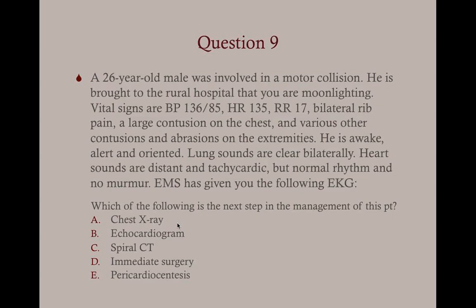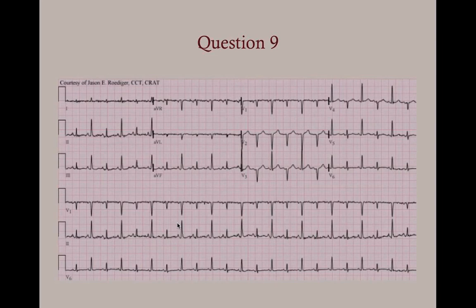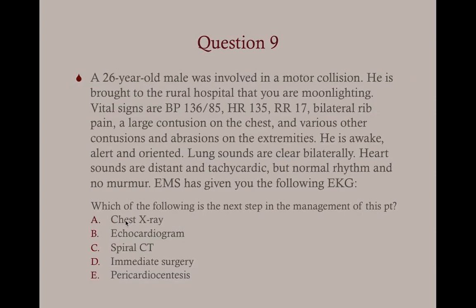Question nine: A 26-year-old male involved in a motor vehicle collision, brought to a rural hospital. Vital signs: BP 136/85, heart rate 135, respirations 17. He has bilateral rib pain, a large chest contusion, and various extremity contusions. He is awake, alert, and oriented. Lung sounds are clear bilaterally. Heart sounds are distant and tachycardic, normal rhythm, no murmur. EMS provided the following EKG. Which is the best next step? A, chest x-ray; B, echocardiogram; C, spiral CT; D, immediate surgery; or E, pericardiocentesis? The answer is echocardiogram.